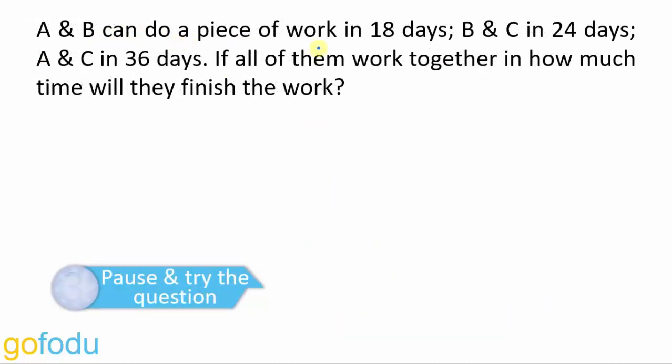Next question. A and B can do a piece of work in 18 days. B and C can do it in 24 days. A and C in 36 days. So we have total work as LCM of 18, 24, and 36. Total work will be 72.